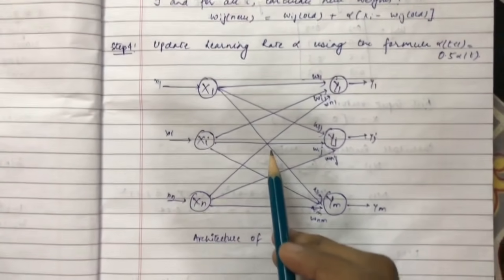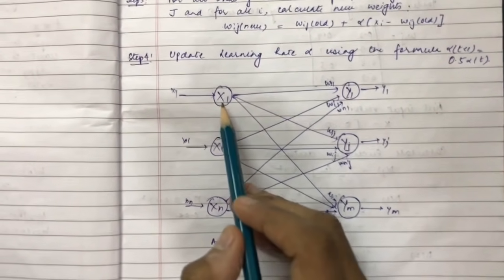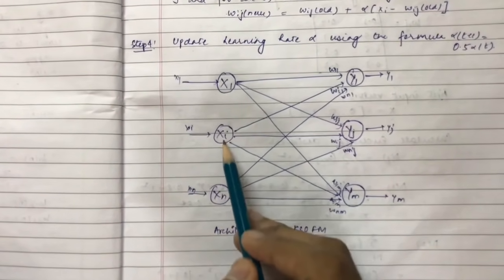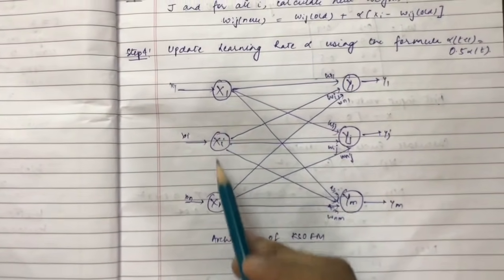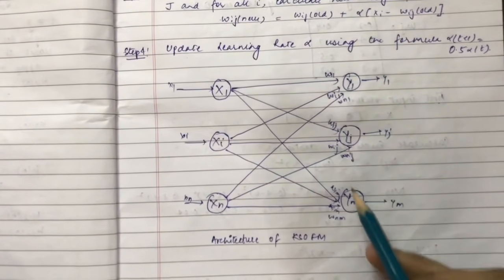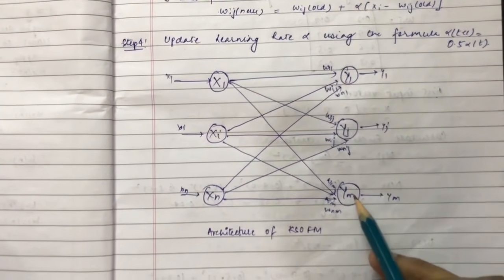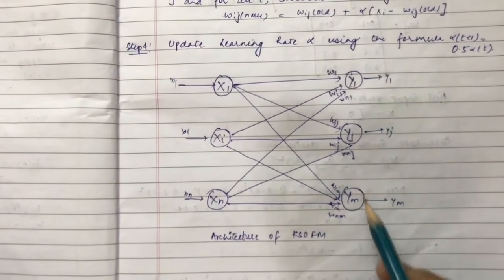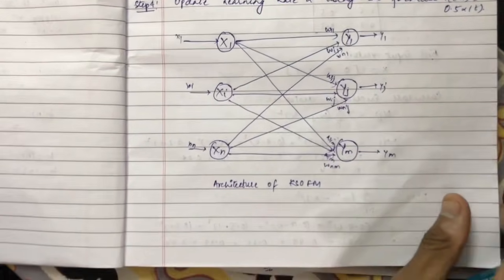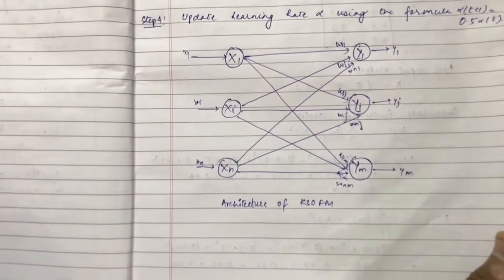The weight update formula is: wij(new) = wij(old) + alpha * (xi - wij(old)). This is the architecture model for the Kohonen Self-Organizing Map, where x1, xi, xn are all input vectors and y1, yj, ym are all the clusters. Now let us look at the question.